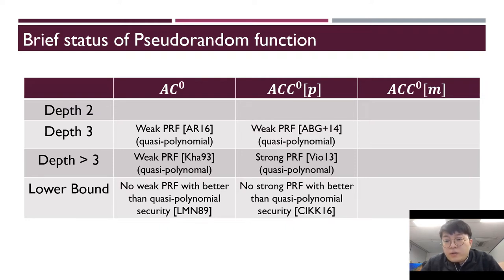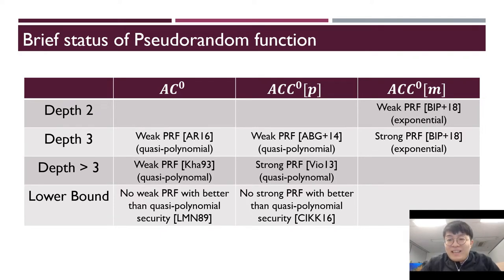Akavia et al. construction gives a weak PRF candidate that can be computed in depth 3 with ACC^0 class. In general ACC^0 with general modulus m gate, Boneh et al. proposed a weak PRF that can plausibly have exponential security. Simple extension of their construction gave a strong PRF that can be implemented by depth 3 circuits in ACC^0. Our target is a weak PRF which has exponential security.